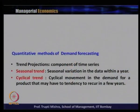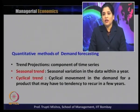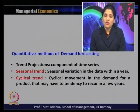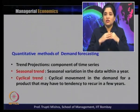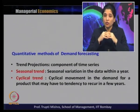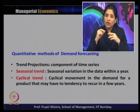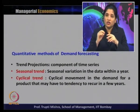The second component is seasonal trend — the seasonal variation in the data within a year. For example, the demand for ice cream will be high in summer and comparatively low in winter and rainy seasons. This variation will be present throughout the time series data. Similarly, the demand for winter garments is more in the winter season and less in summer. For seasonal products, the variation occurs within a year in that specific season when the product is used.